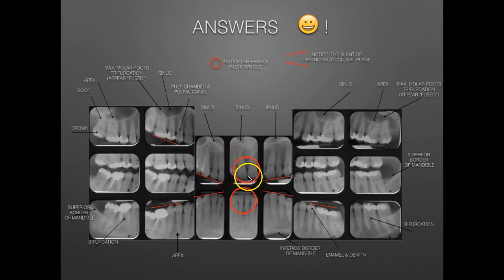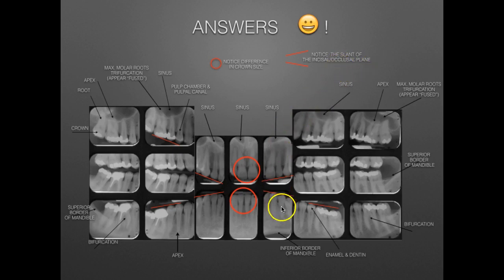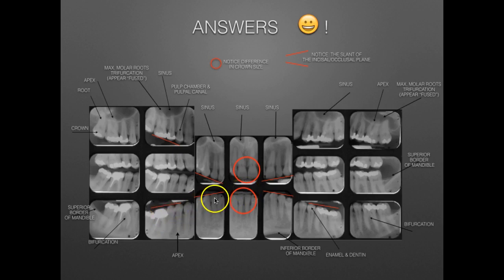Something else to notice is the difference in crown size. Based on dental anatomy, the crowns of the maxillary central incisors are much bigger than the crowns of the mandibular central incisors. Also notice the incisal or occlusal plane — for the mandibular teeth in radiographic images, the occlusal plane tends to slope upward toward the midline. For the maxillary dental arch, the occlusal plane tends to slope downward from the posterior to the anterior midline.